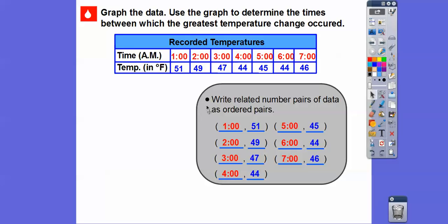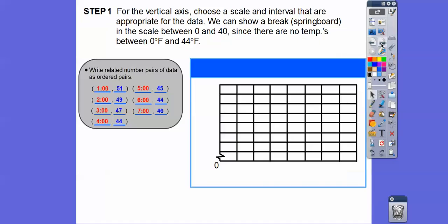And then we're going to graph this ordered pair, 1, 51, 2, 49. Let's just move that over right there. So here's a graph that they provided for us, and we're supposed to, for the vertical axis, the vertical axis is this axis right here, we're going to choose a scale and an interval that's appropriate for the scale. So there's a springboard here. Your book doesn't call it a springboard, but I call it a springboard.